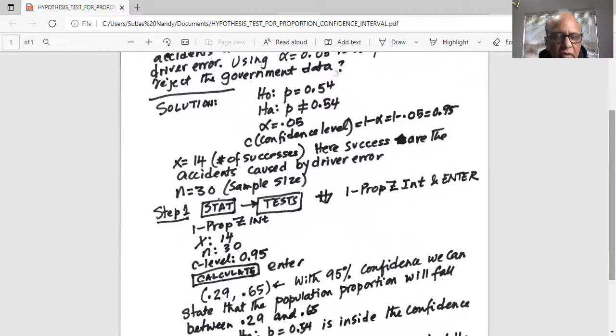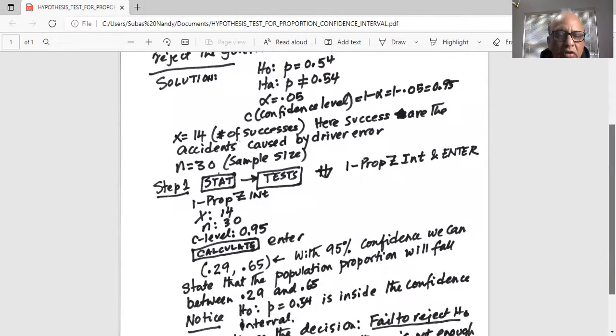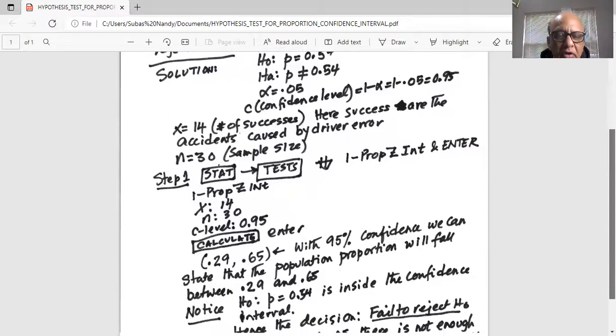So the two numbers that we get are 0.29 and 0.65. What does it mean? With 95% confidence, we can state that the population proportion of accidents caused by driver error will fall between 0.29 and 0.65.